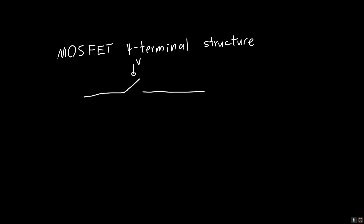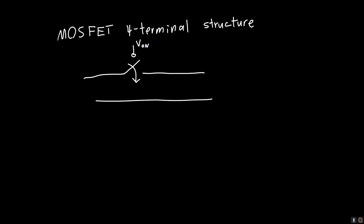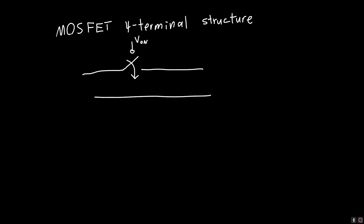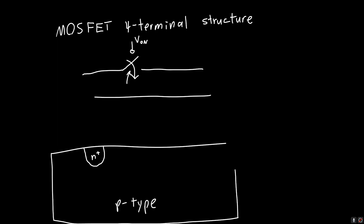When we apply some voltage V, this switch closes and the MOSFET just acts like a wire. So how do we actually do that? Well, we know how to create an open switch. One structure that doesn't conduct electricity is a reverse biased diode. So if we've got a p-type substrate and we've got these two n-plus regions — very heavily doped n-type regions, though they don't need to be n-plus, they can just be n.